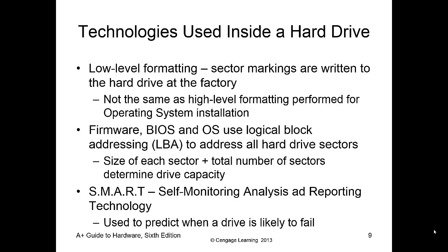How do we actually label those tracks and sectors? They're labeled as a logical block address, or LBA address. The LBA allows every accessible portion of that hard drive to have an address. Just like memory, if we don't have a physical address to where it's at, it doesn't exist. Drive capacity is determined by how large the sectors are and how many sectors there are.